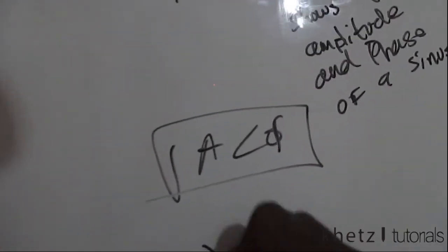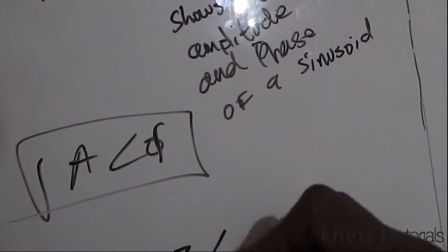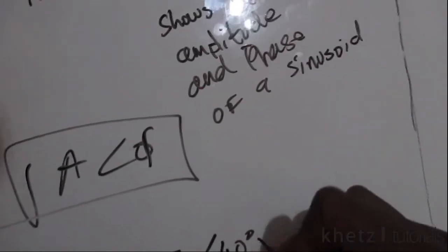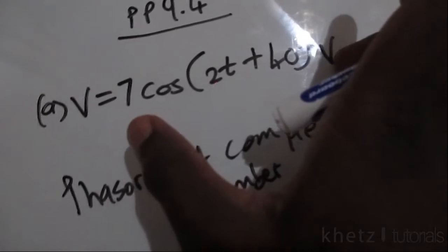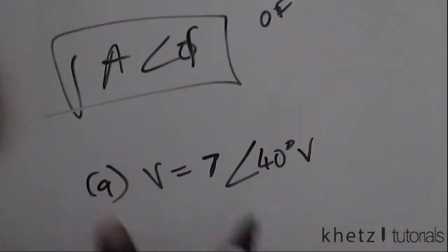So for part a, our answer is simply 7 at an angle of 40 degrees, not forgetting the units. We just took this amplitude as well as this phase, and that is basically how you convert that into a phasor.